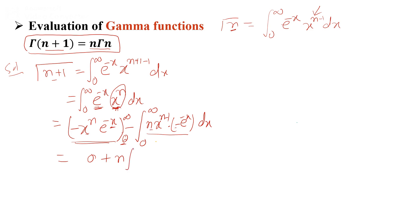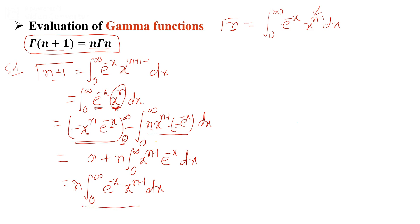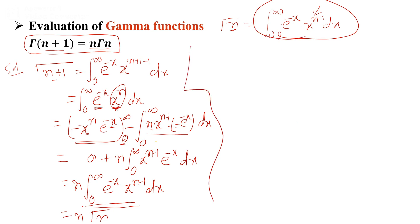That factor becomes 0, so the minus signs give plus n. Taking n outside the integral, we write n times the integration from 0 to infinity of x raised to power n minus 1, e raised to power minus x, dx. This integral is exactly Gamma(n), so we prove the relation: Gamma(n+1) = n·Gamma(n).